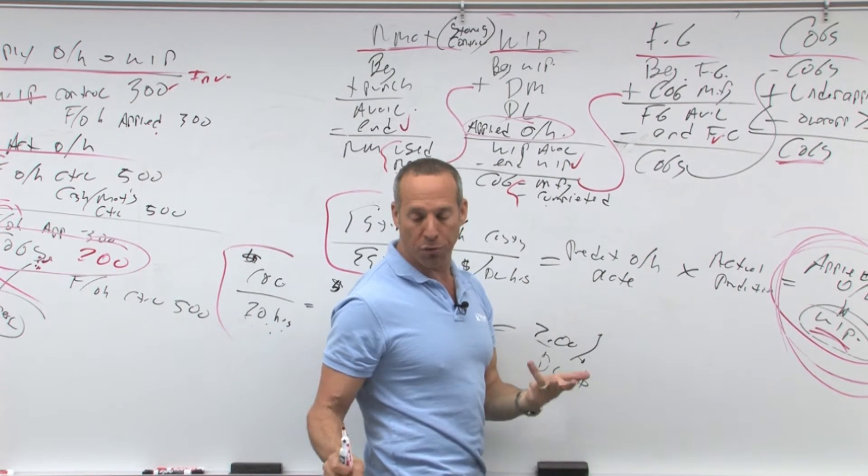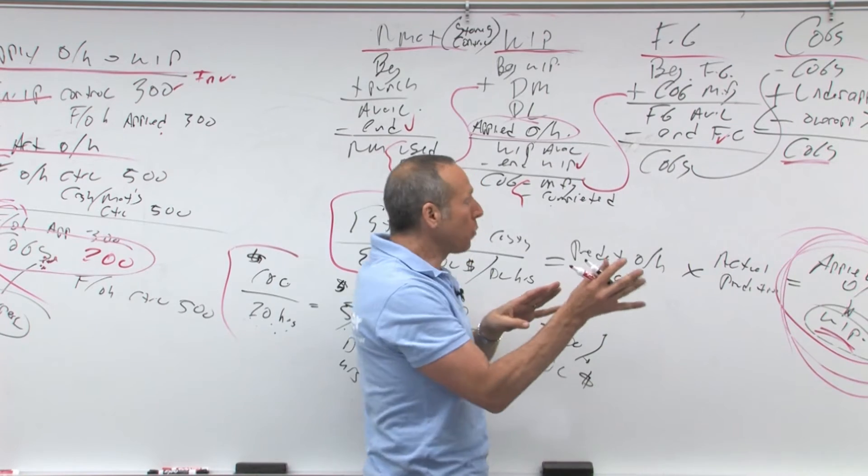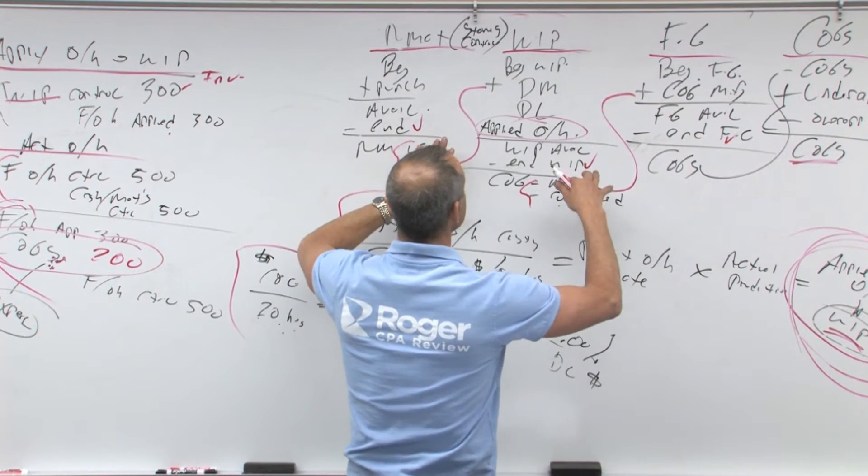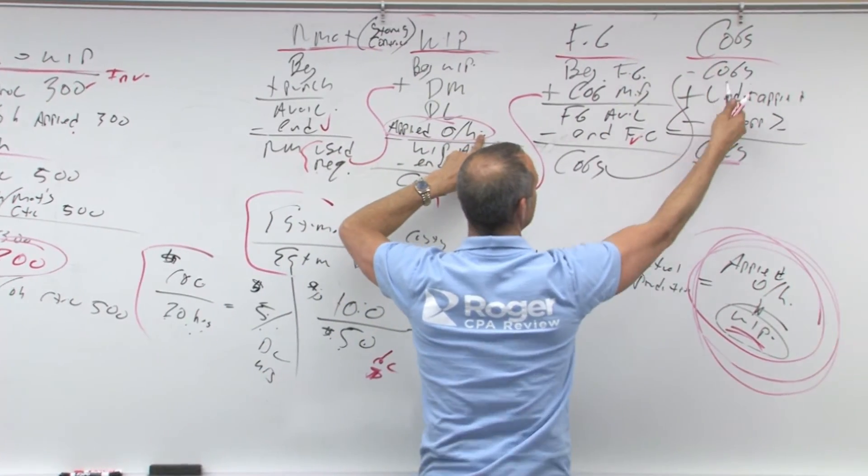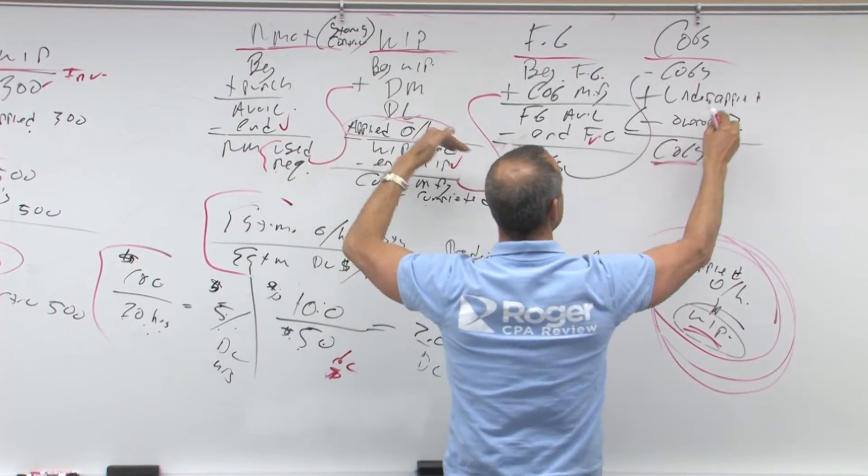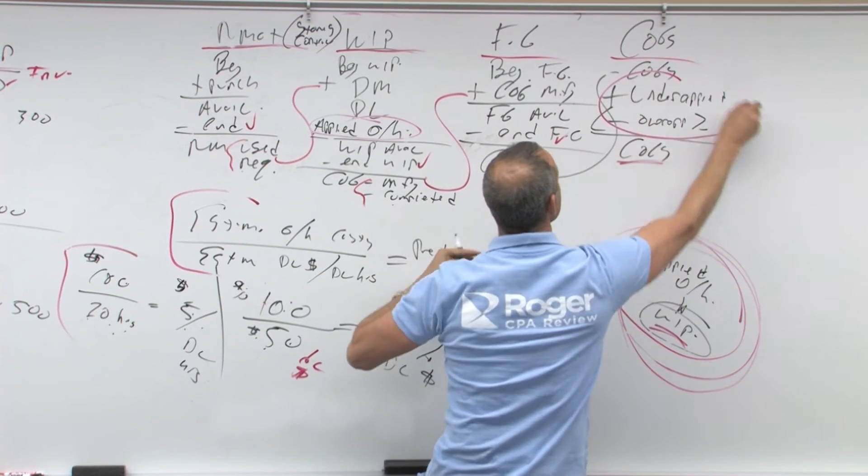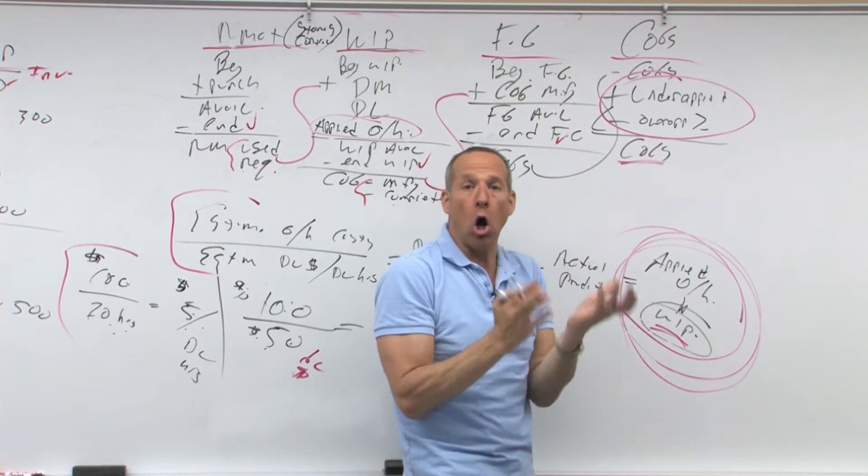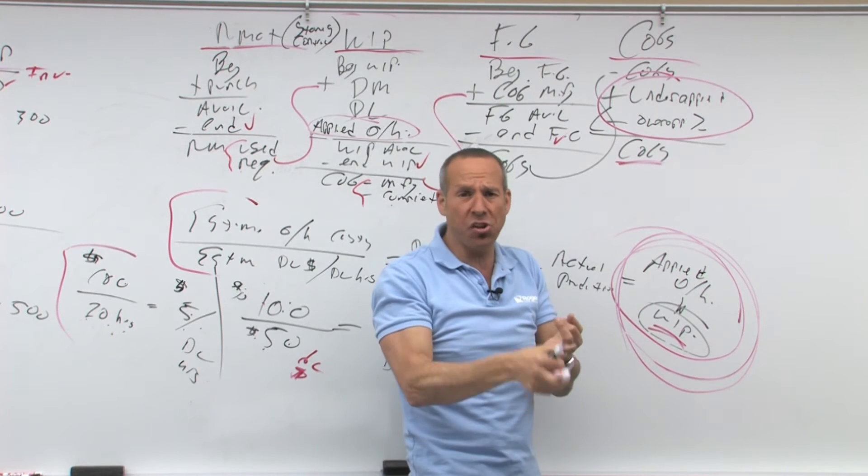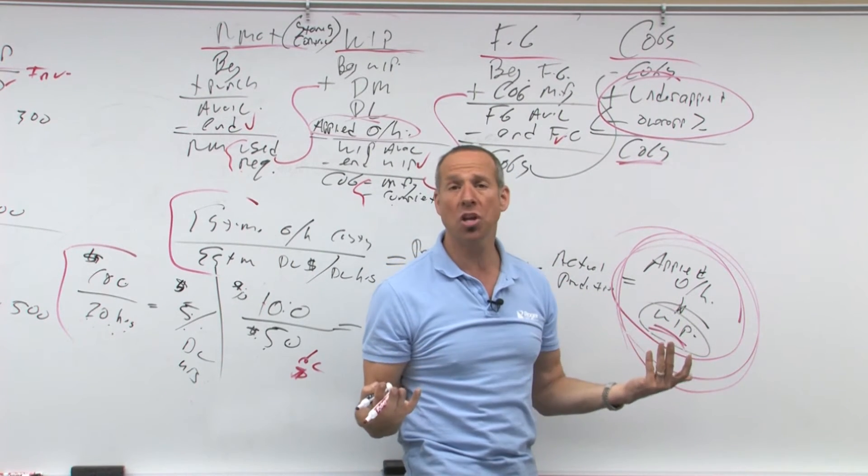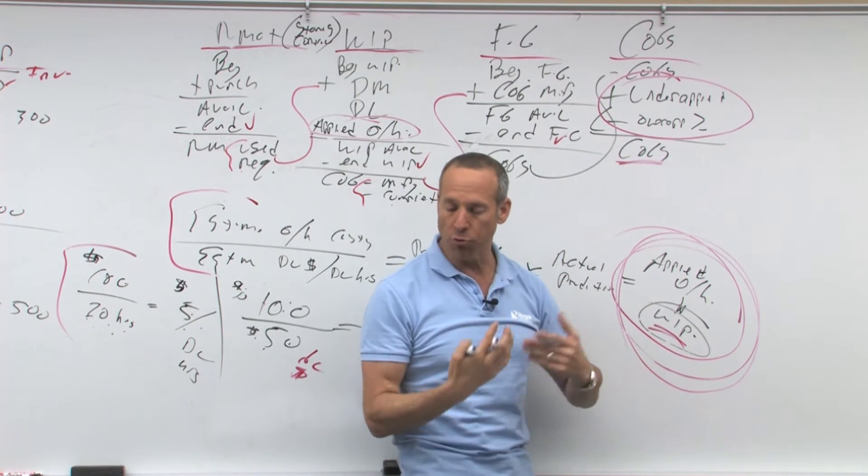That is how we're flowing as we go through. Now, realizing again that at the end, this is going to be what we applied, this is the actual over here, that's where we adjust for over under applied. That is what's going to account for our overhead variance. It's either we spent too much, we were less efficient, our production capacity was down, something went wrong, that's why we're over under.